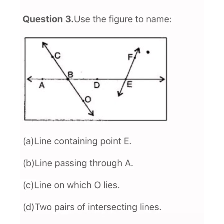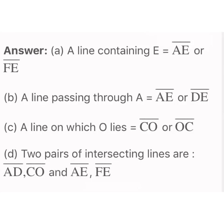The line passing through point A: lines passing through A are line AE and line DE. The line on which O lies: O lies on line CO or line OC. The 2 pairs of intersecting lines are: line AD and line CO, and another pair is line AE and line FA.